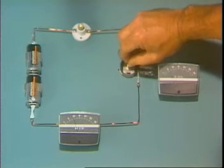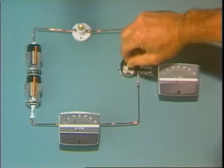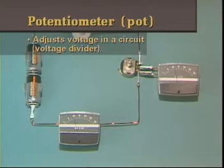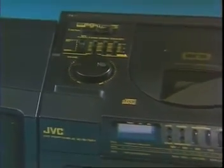This type of variable resistor is known as a potentiometer or pot because it adjusts or divides the potential, the voltage, in a circuit. Such a circuit is often called a voltage divider and will be covered in more depth in a later lesson. A typical application is the volume control on a stereo. The pot varies the sound voltage to be amplified and sent to the speakers.